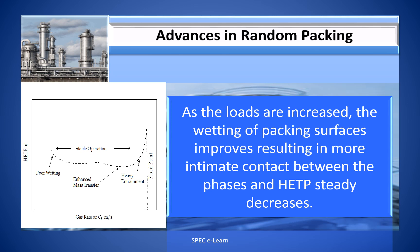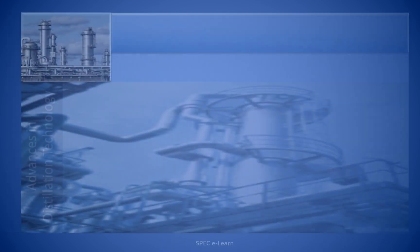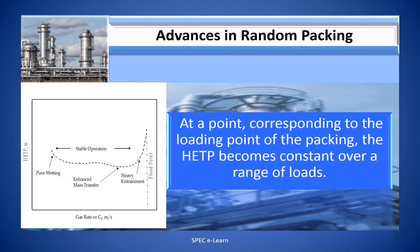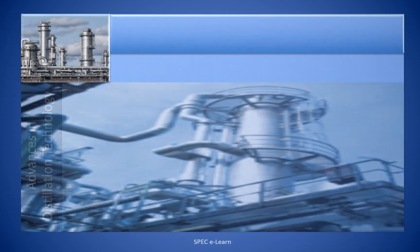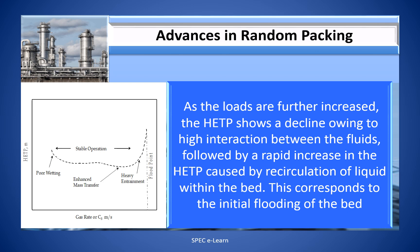As loads are increased, wetting of packing surfaces improves resulting in more intimate contact between the phases, and HETP steadily decreases — this is Region 2. As loads are further increased, HETP shows a decline owing to high interaction between the fluids, followed by a rapid increase in HETP caused by recirculation of liquid within the bed. This corresponds to the initial flooding of the bed — Region 3.